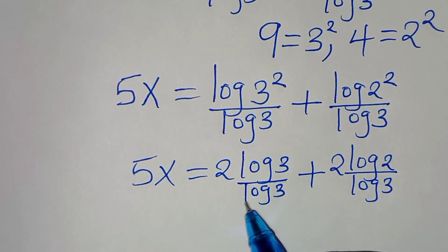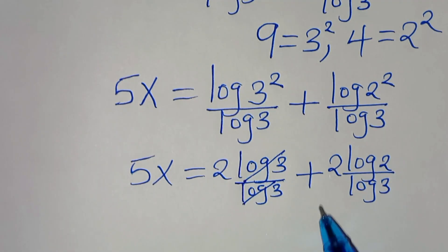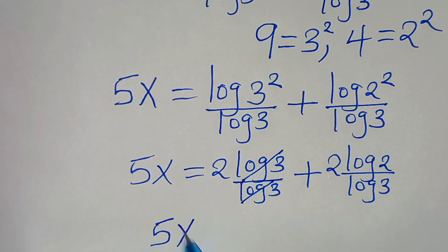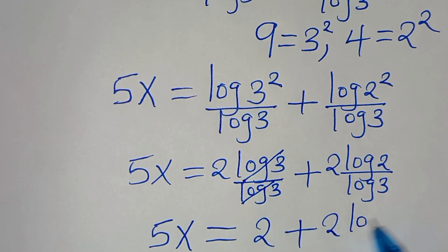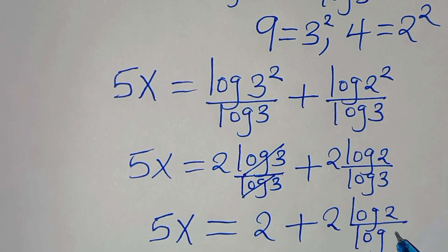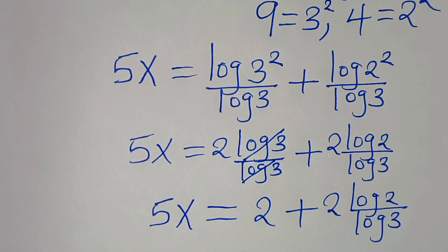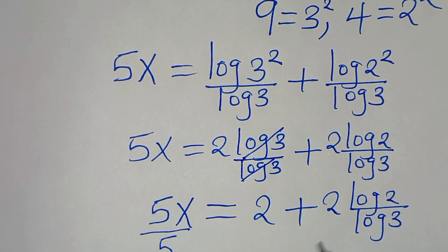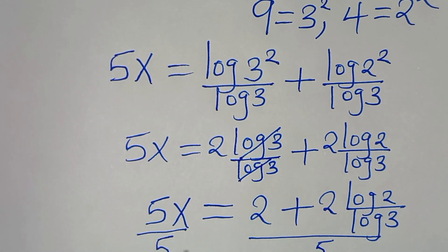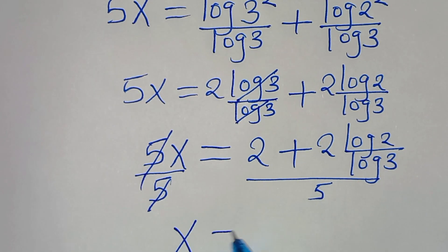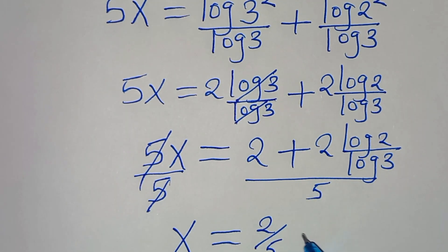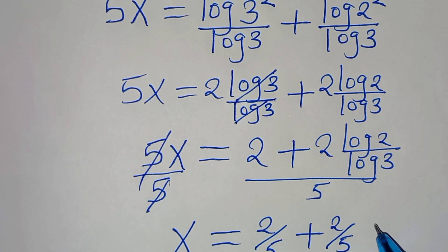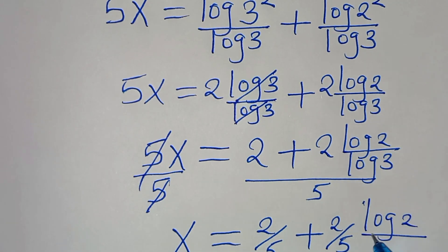Simplifying log 3 over log 3, we have 5x equals 2 plus 2·log 2 divided by log 3. Dividing both sides by 5, we get x equals 2 over 5 plus (2/5)·(log 2 divided by log 3).